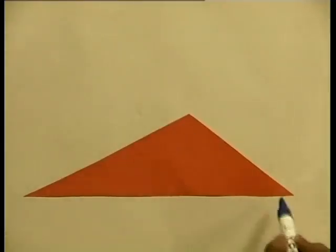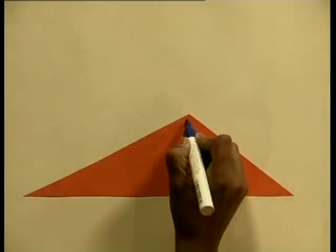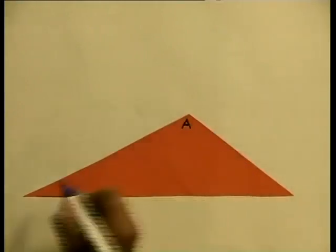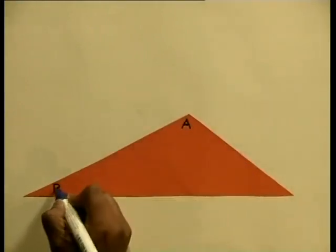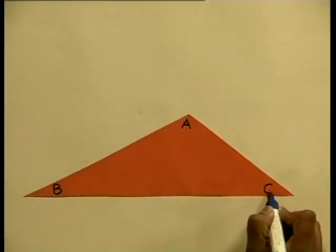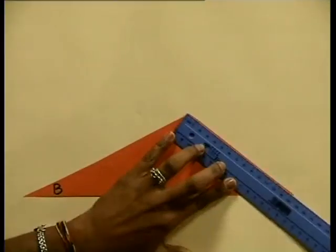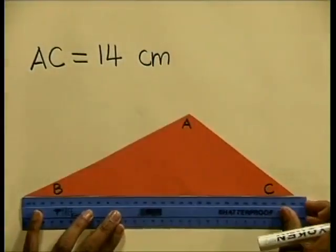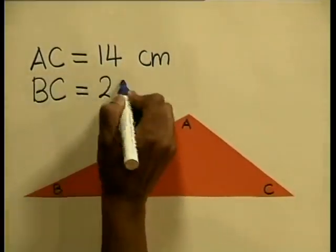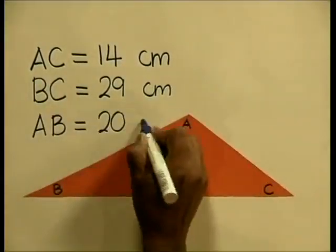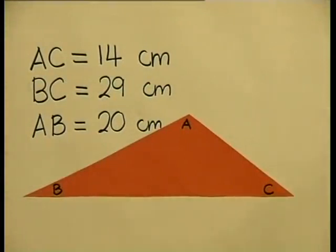I will start by labeling the sides of the scalene triangle. I will call this point A, this one B, and this one C. Let's measure the sides — that confirms that we are working with a scalene triangle.